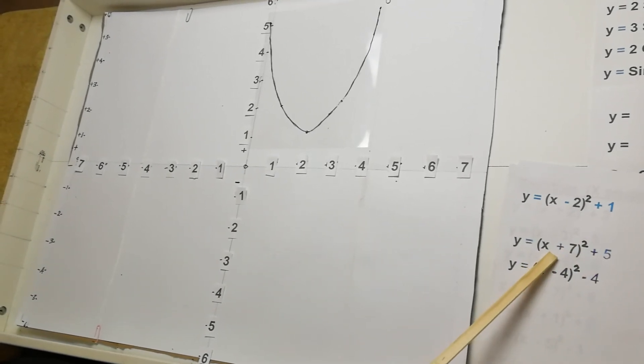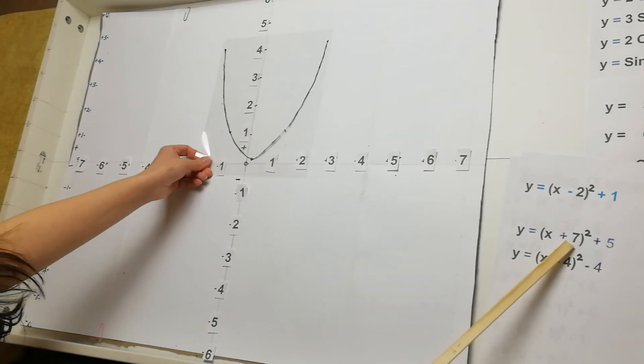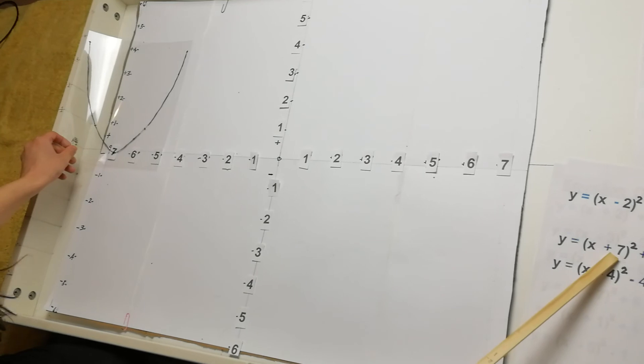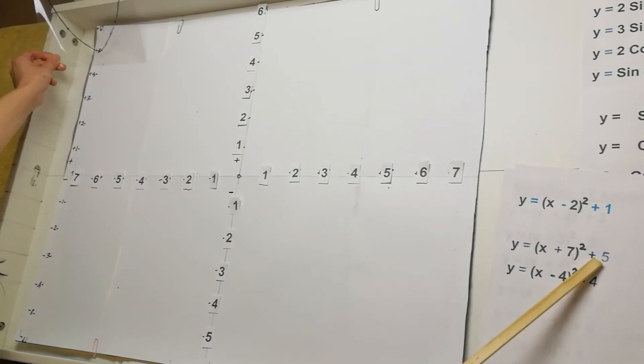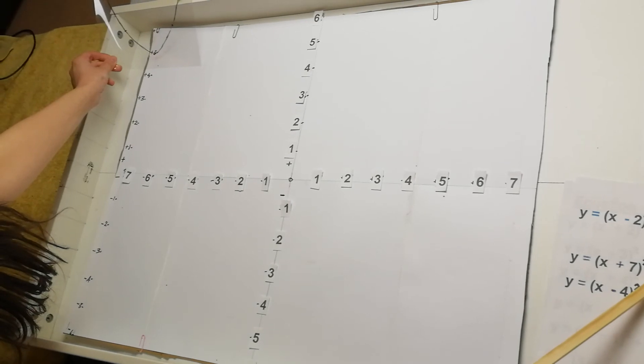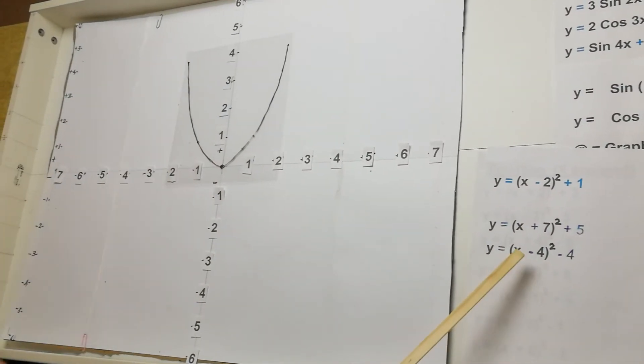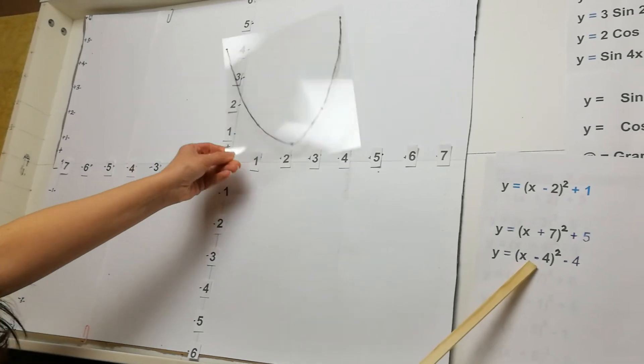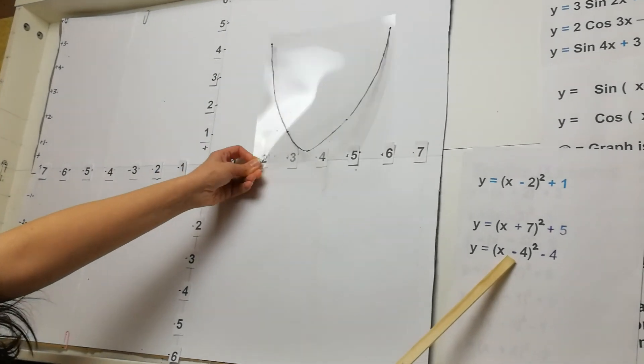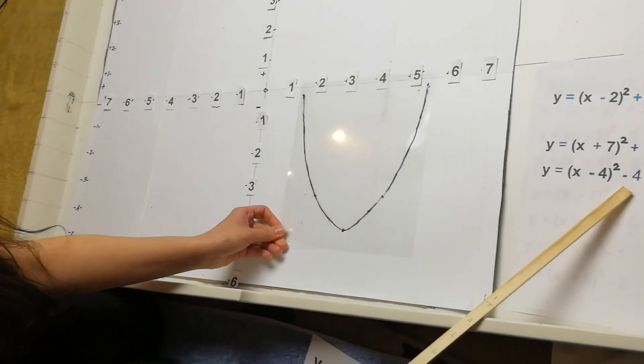This one here, a plus in the bracket means moving to the left by that number. So moving to the left by 7, plus 5, moving up to the number 5 here. This one, take away 4, means moving to the right by 4. And minus 4, moving down by 4.